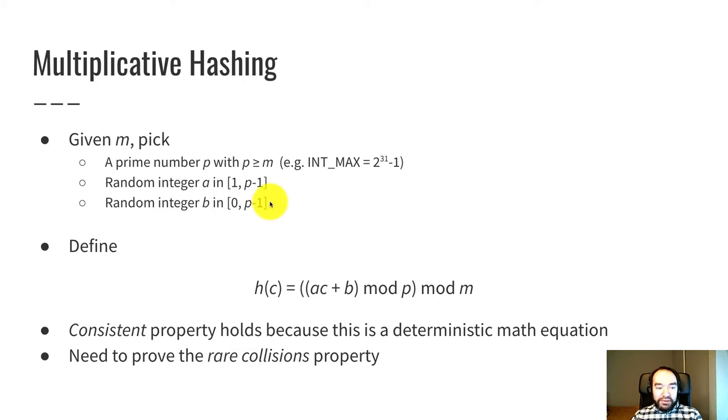So once we've made those three decisions on prime p and two random ints a and b, we define our hash function to be the following. Hash of c is ac plus b mod p and then mod m. So putting that together, ac plus b is like the linear equation part.